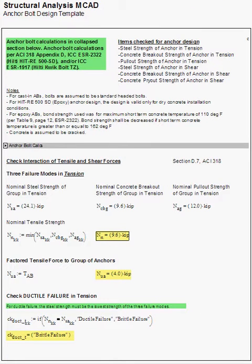The calculations are on this page in the collapsed section. Steel strength, pullout strength, breakout strength, and pryout strength are checked according to ACI 318 and engineering service reports when applicable.